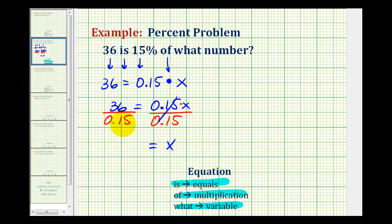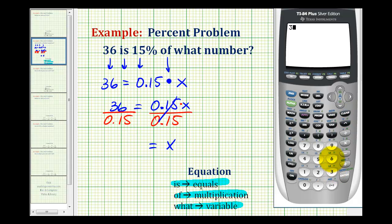Now we need to determine this quotient. So we have 36 divided by 0.15, and x is equal to 240.